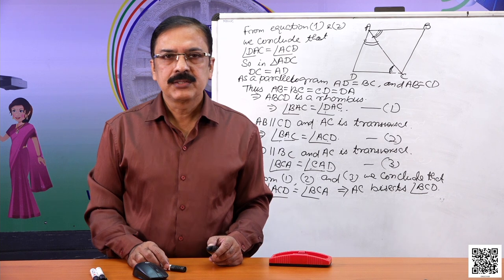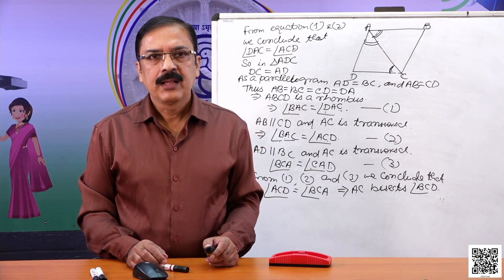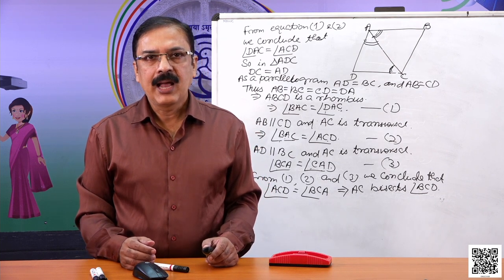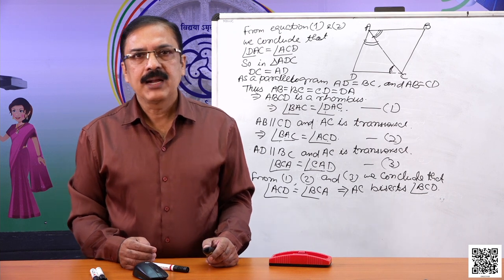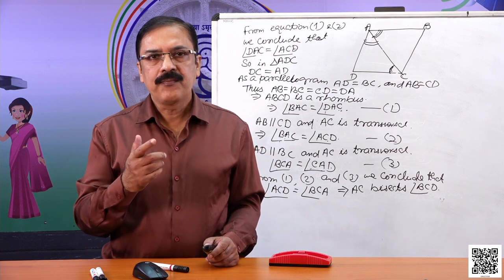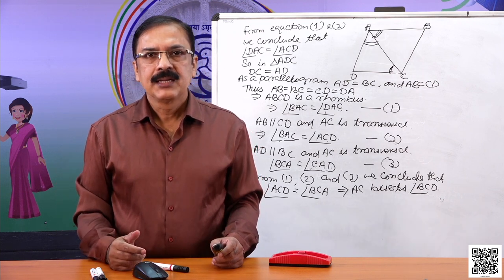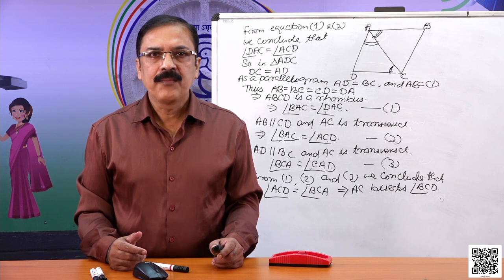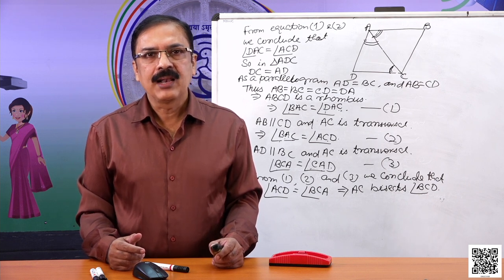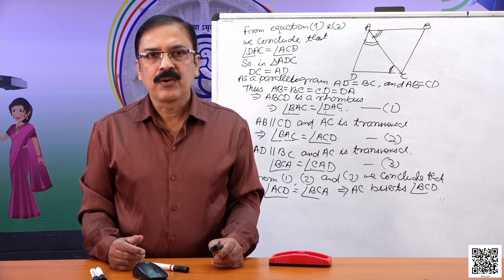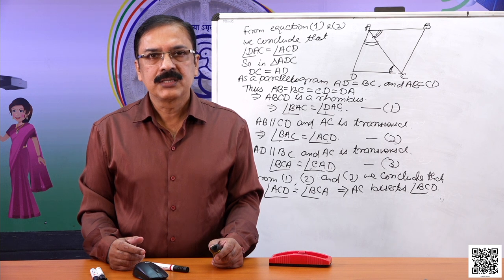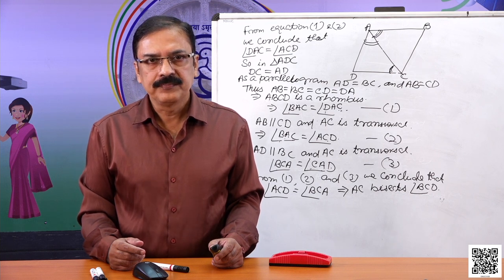Dear students, today we discussed another property of a parallelogram: if one pair of opposite sides are equal and parallel, then that quadrilateral is a parallelogram. Using this, we solved some problems. I hope you understand it. Thank you.